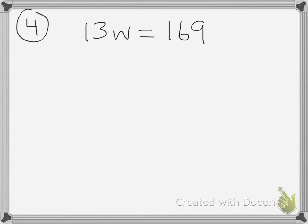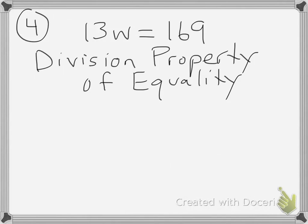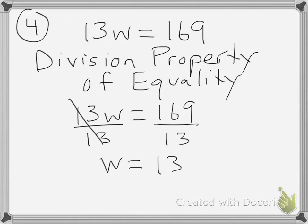Let's take a look at our fourth and final example. We have 13w is equal to 169. This would be an example of the division property of equality because I am performing the same operation — division — on both sides of the equation in order to isolate the variable. When I divide both sides by 13, I can see that w is equal to 13. And that is, again, an example of how to use the division property of equality.